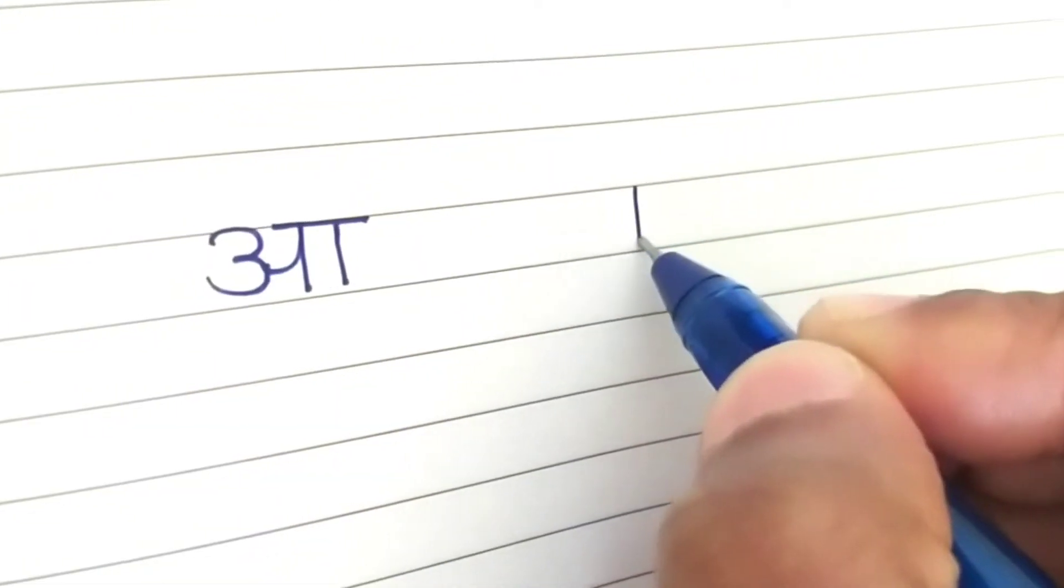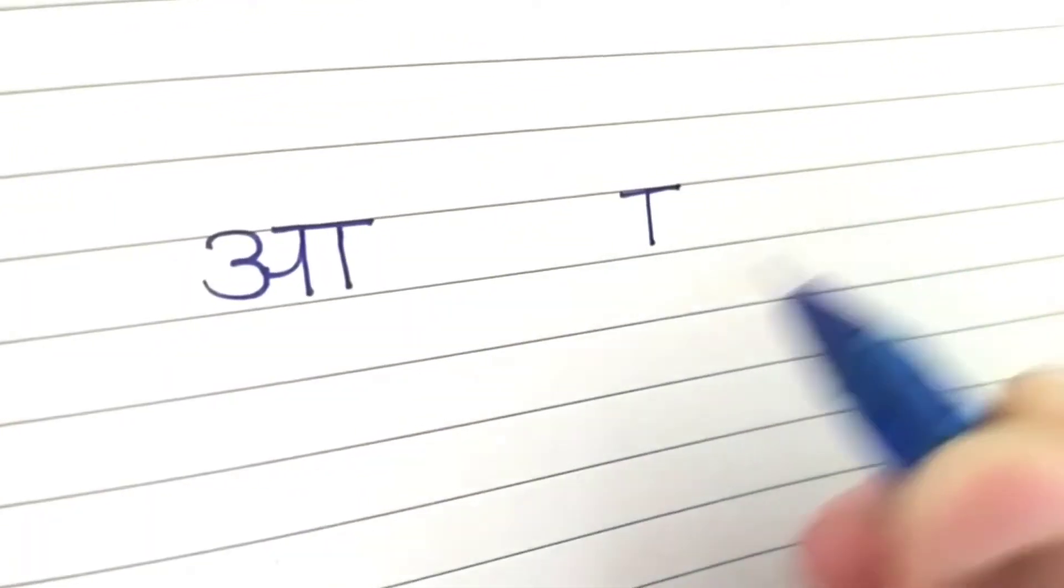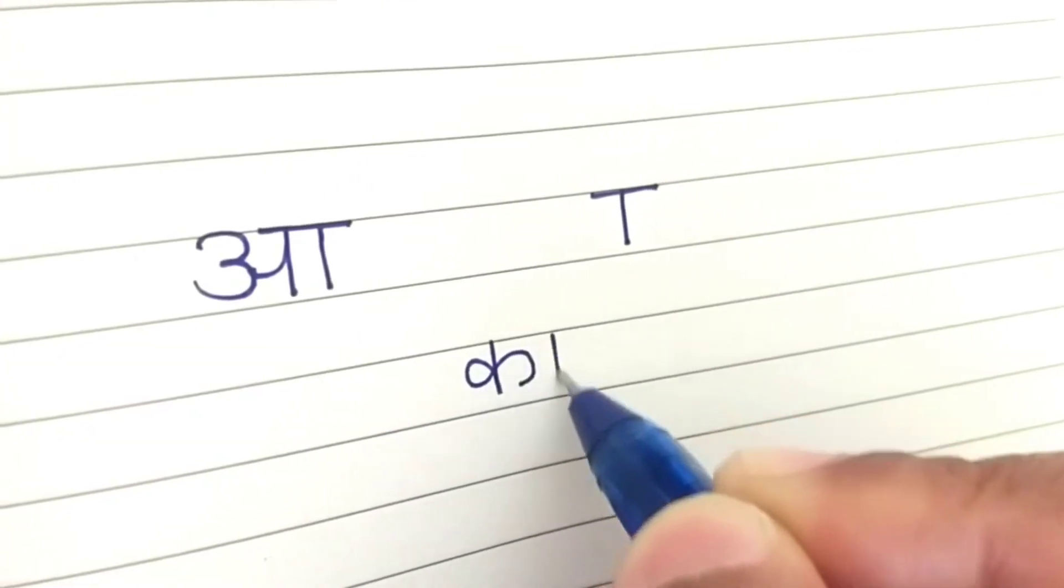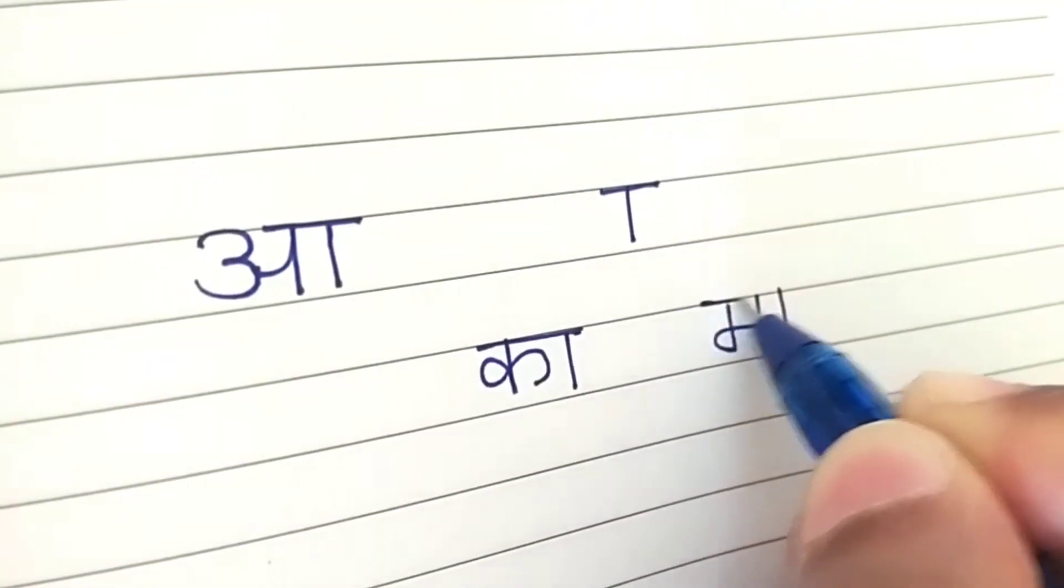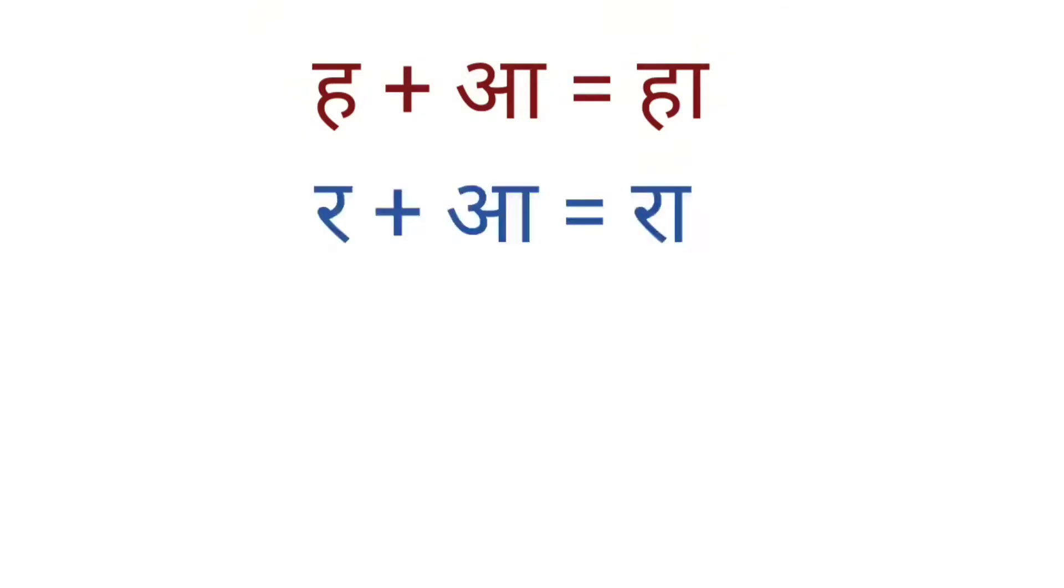Next vowel, A. This is the symbol for the sound. Ka, Ma, Ha, Rha, Cha, Sa.